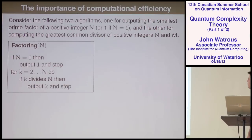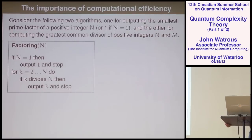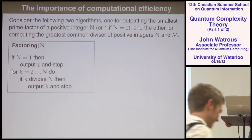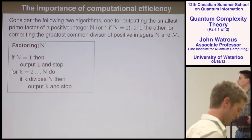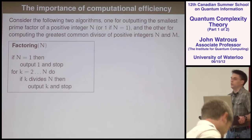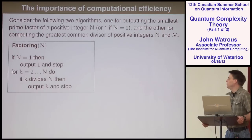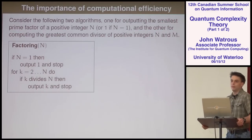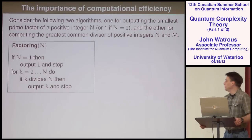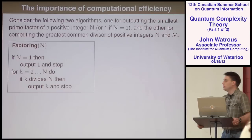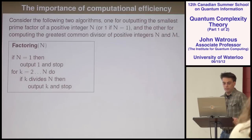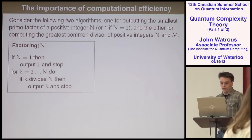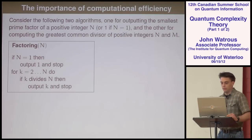Here's the factoring algorithm — it's very simple. Essentially it's just searching for a factor. You input some number N and you'd like to output the smallest non-trivial factor of N. Or if N equals one, you output one. Otherwise you start searching for something that divides N, and when you find it, you output it and stop. Eventually you'll hit one because you'll get to N at some point, and if you have no other factors, that'll be a factor.